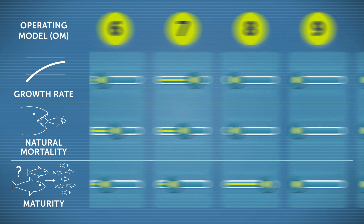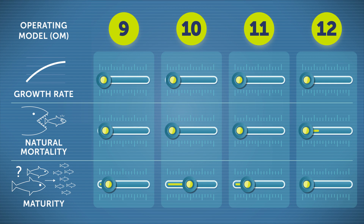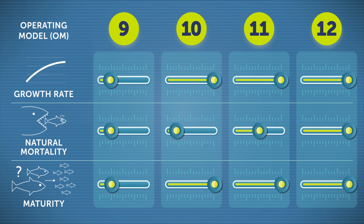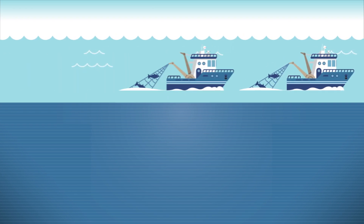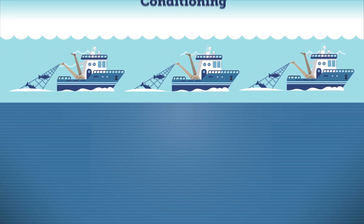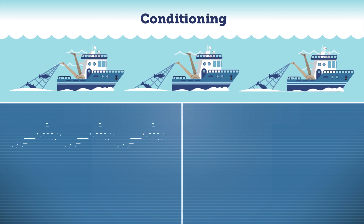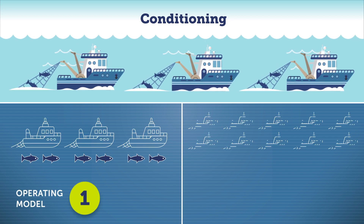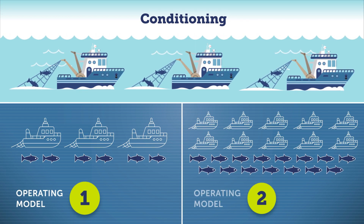Each operating model represents a potential combination of hypotheses about how the real system functions. Scientists eliminate unlikely operating model scenarios using a technique called conditioning, which compares the operating models to available real-world data from the fishery,